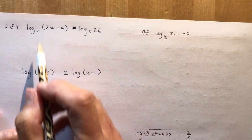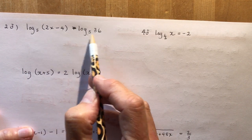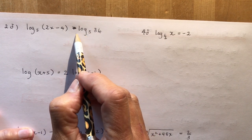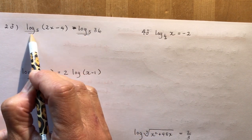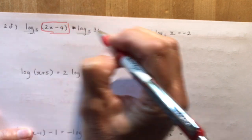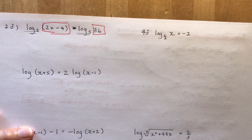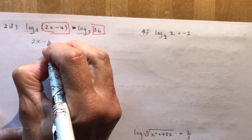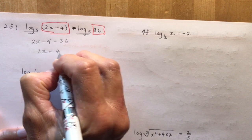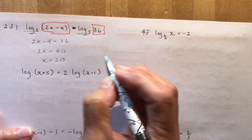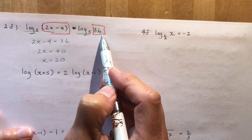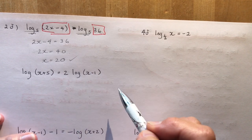Here's one from your textbook: 2x minus 4 equals log base 5 of 36, with log base 5 on both sides. I don't need to move anything because both sides have the same log, so this expression must equal that one. It's a really easy one — just say 2x minus 4 equals 36, so 2x equals 40 and x equals 20. Plug 20 in and you get a positive answer.